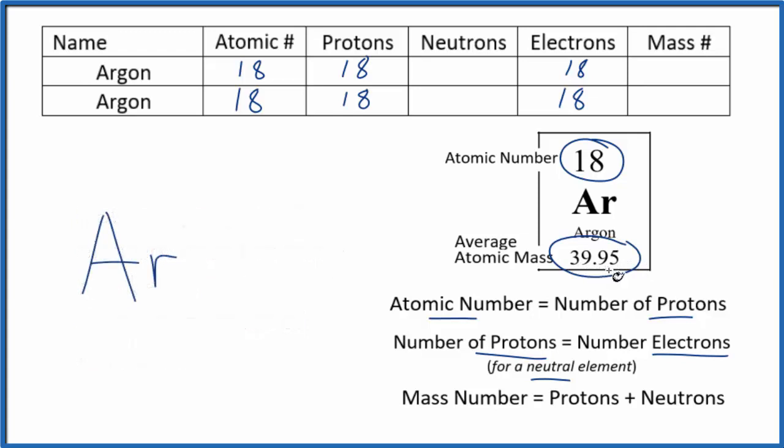We're going to round the average atomic mass to a whole number - let's round that to 40. Now we can figure out the neutrons, because 40 equals 18 (the number of protons) plus X. So it's going to be 22. 22 plus 18 gives 40, so we'll have 22 neutrons for this isotope of argon.